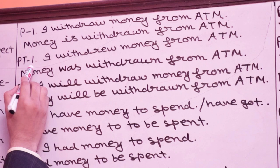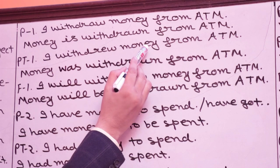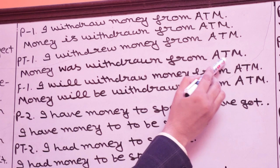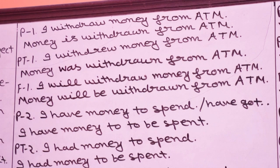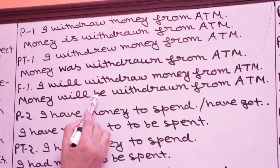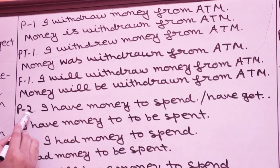PT1 — past indefinite: 'I withdrew money from ATM.' Money becomes subject; past tense so 'was.' Passive: 'Money was withdrawn from ATM.' F1 — future indefinite: 'I will withdraw money from ATM.' Will is a modal verb, so use be plus third form. Passive: 'Money will be withdrawn from ATM.' All three give the same meaning.